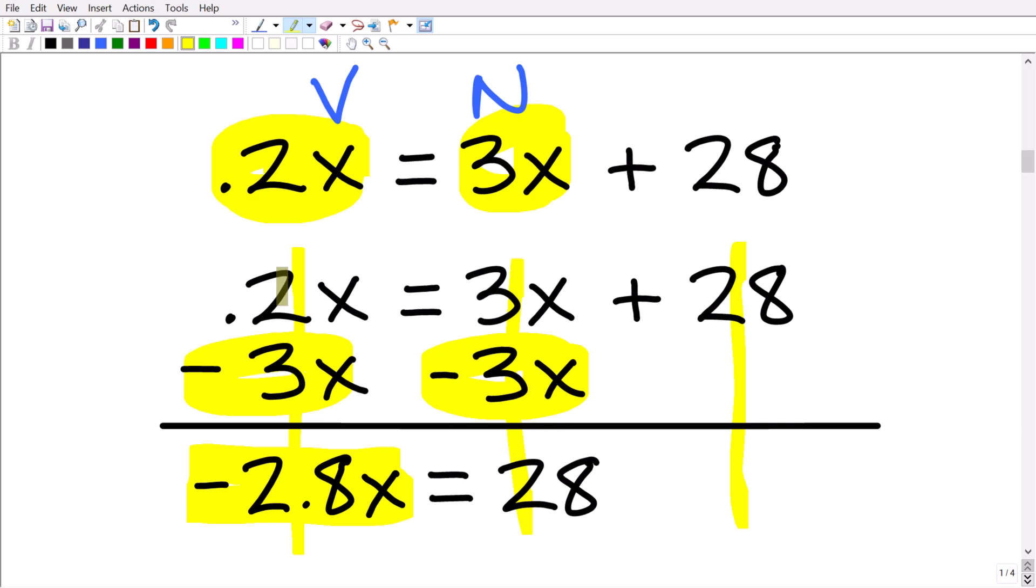You got to be very careful here with these positive and negative values. And that's going to be equal to 3x minus 3x, which of course is zero. And we have 28 plus nothing, of course, is 28.